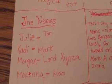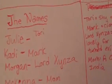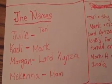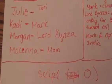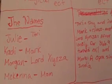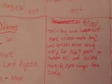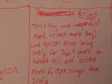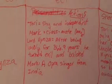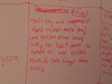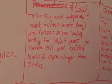Then you need the names — this is the fun part for me. The names I have are Julie, Tori, Mark, and Lordian. McKenna is the mom. For boy dolls, you can turn your AG doll into a boy. Then you need their personalities: Tori was shy and independent, Mark was a classmate extra, Lord Zenzia turned evil after being lonely for 366.9 years, and Mom is an opera singer from India.